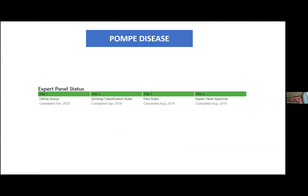The ClinGen group for Lysosomal Storage Disease was formed in February 2018. It took them almost from 2018 to August 2019 to have final approval. Imagine — just for one disease, it took them almost a year and a half to come up with a conclusion and guideline on how to classify a variant. So don't expect that in 20 minutes we will go over all possible classifications for Pompe disease variants.